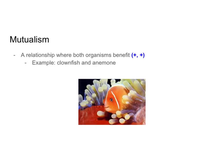In a mutualism, both organisms are benefiting — we can call it a positive-positive relationship. An example is the clownfish, like Nemo from Finding Nemo, and an anemone. The clownfish gets protection from the anemone because the anemone can sting other organisms, whereas the anemone benefits because the clownfish eats any little algae growing on it and helps keep it clean. So that's an example of a mutualism.